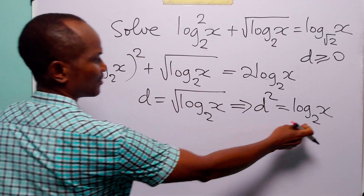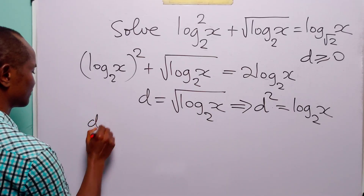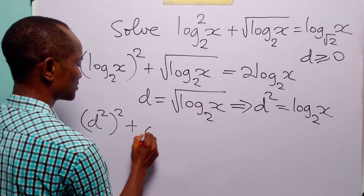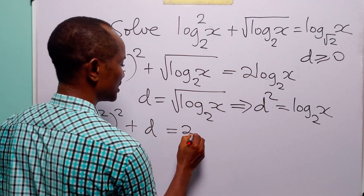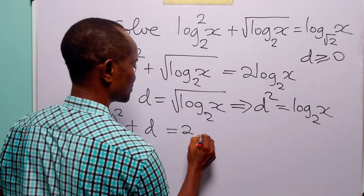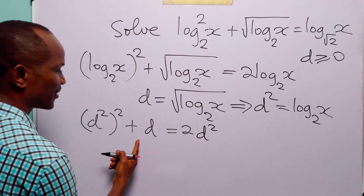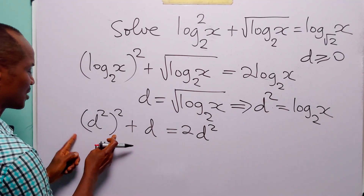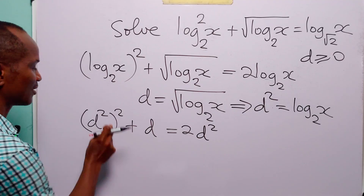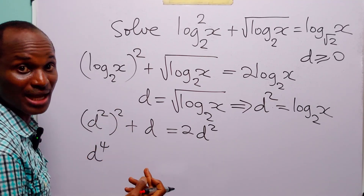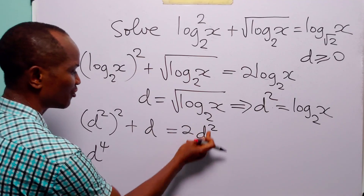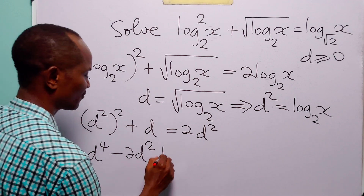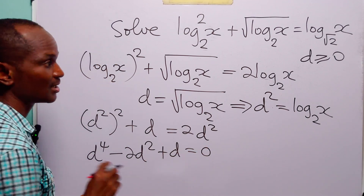Here we have log to base 2 of x, which equals d squared, and this is squared plus d equals 2 times d squared. Arranging this equation, we have d to the power 4 — since 2 times 2 equals 4 — minus 2d squared plus d equals 0.